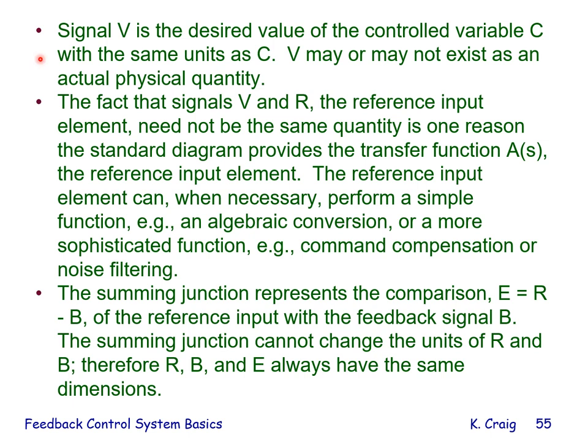Signal V is the desired value of the control variable C with the same units as C. V may or may not exist as an actual physical quantity. The fact that signals V and R need not be the same quantity is why the standard diagram provides the transfer function A(s), the reference input element. The reference input element can perform simple algebraic conversion, command compensation, or noise filtering. The summing junction represents E equals R minus B, and cannot change the units of R and B — therefore R, B, and E always have the same dimensions.